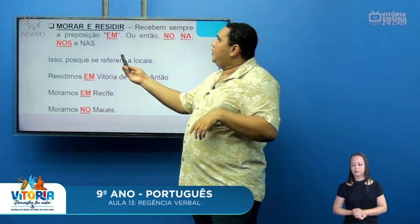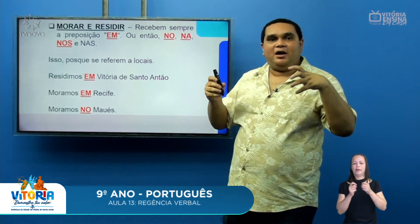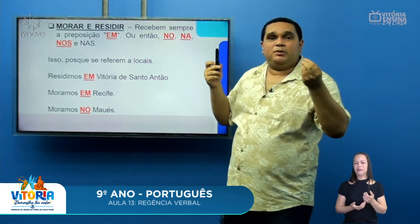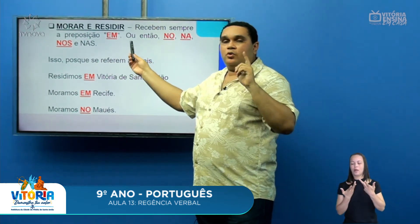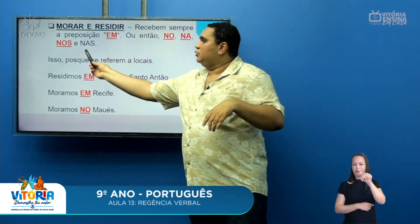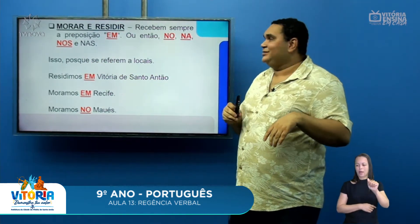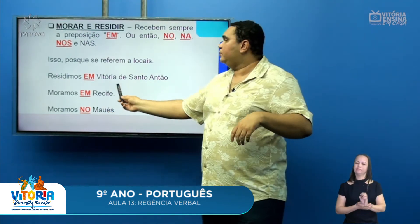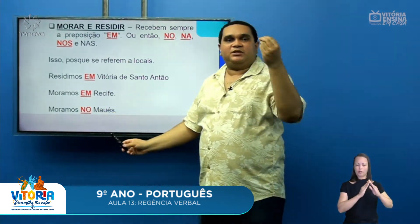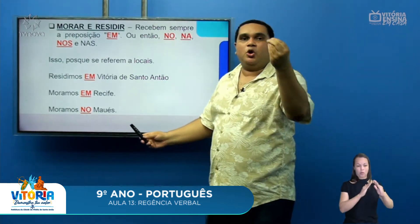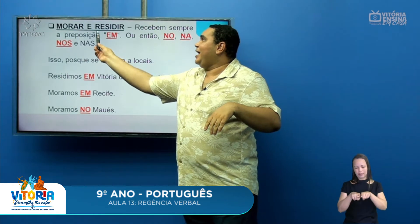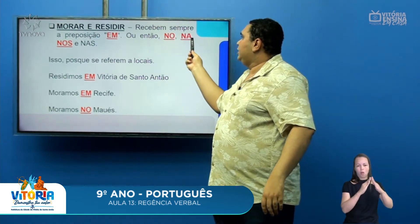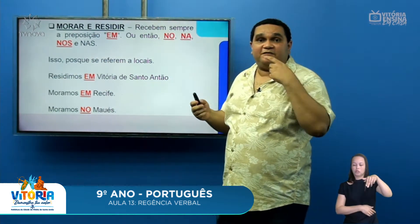Com os verbos morar e residir, nós sempre vamos utilizar a preposição 'em', ou então 'no', 'na', 'nos' e 'nas', porque se referem a locais. Por exemplo: 'Residimos em Vitória de Santo Antão' — correto. 'Moramos em Recife' — correto. 'Moramos no Maués' — correto.